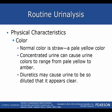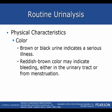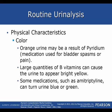Diuretics include things such as tea or anything with caffeine, as well as certain medications. Urine that is brown or black indicates a serious illness — whenever you have a sample that color, alert your physician immediately. A reddish-brown color may indicate bleeding in the urinary tract or from menstruation, so always ask female patients if they are menstruating. Orange color may result from pyridium, a medication for bladder spasms or pain. Large quantities of B vitamins can cause bright yellow urine, and some medications such as amitriptyline can turn urine blue or green.